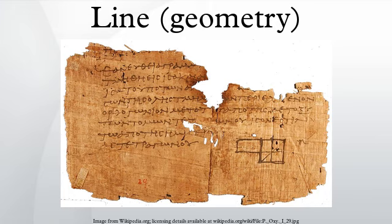Lines in three dimensions may also be described as the simultaneous solutions of two linear equations, such that the two equations are not proportional. This follows since in three dimensions a single linear equation typically describes a plane, and a line is what is common to two distinct intersecting planes. The normal segment for a given line is defined to be the line segment drawn from the origin perpendicular to the line.